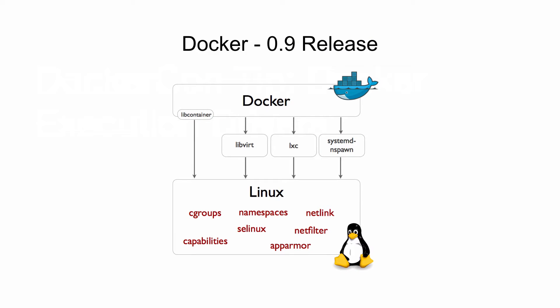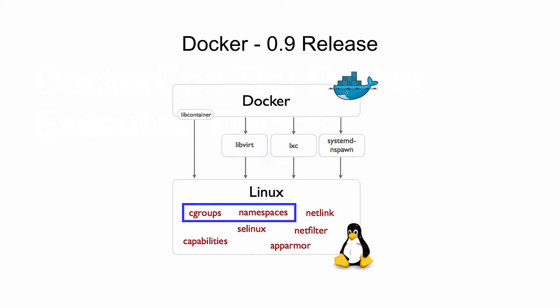Before Docker 0.9 release, Docker used to use LXC to access the Linux kernel features like control groups and namespaces to create the containers.